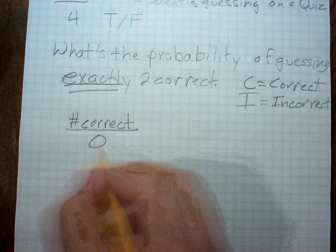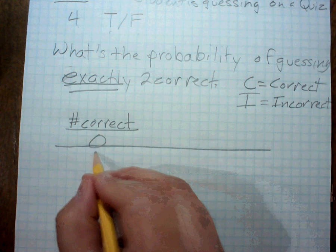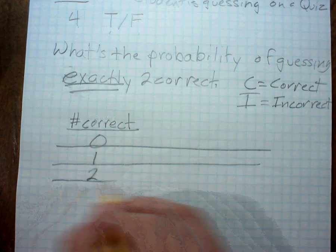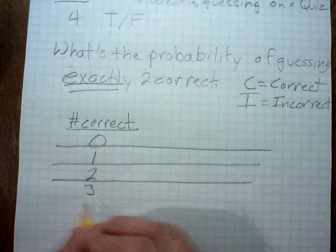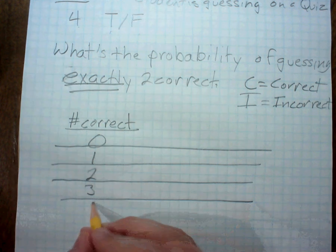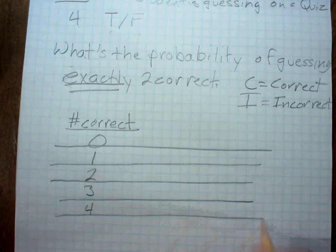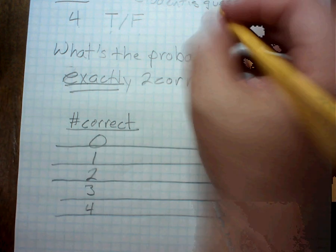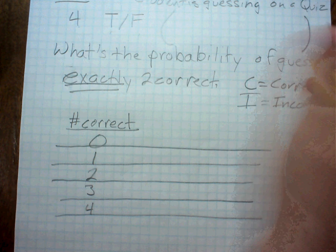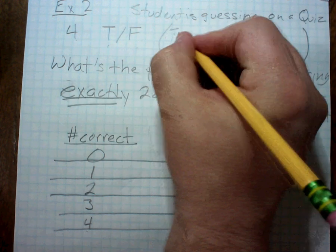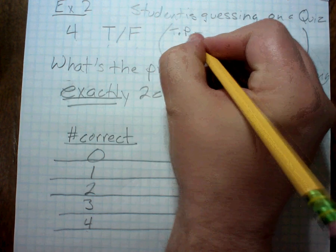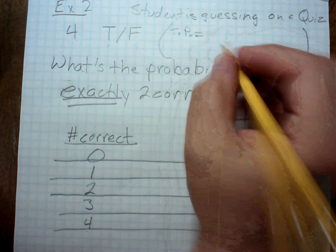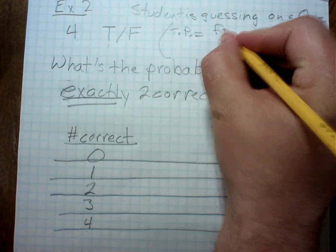We could have zero correct, that's one option. We could have one correct answer, two correct answers, three correct answers, and four. Now to find the theoretical probability, the formula is: theoretical probability equals the number of favorable outcomes...